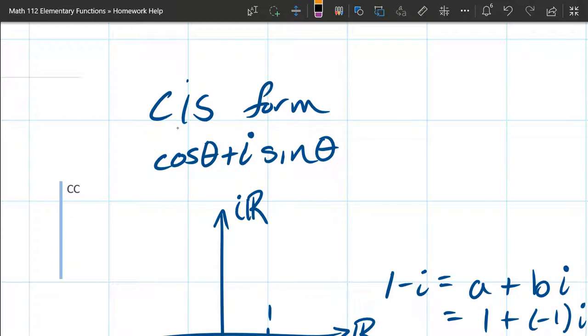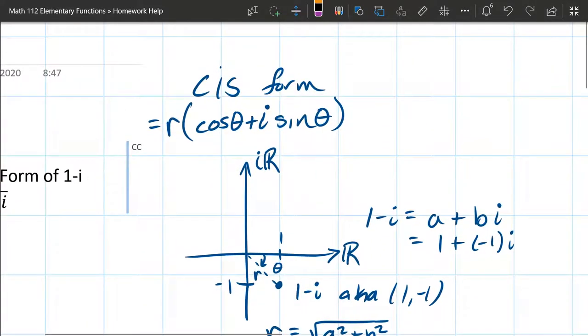Then there's also a distance, or a radius, and that is multiplied on the outside. So this is cosine i sine form.